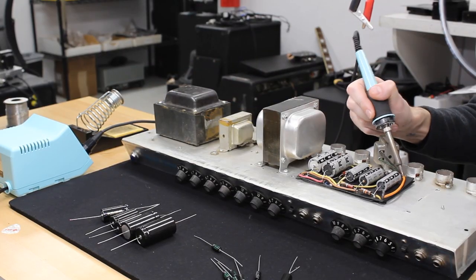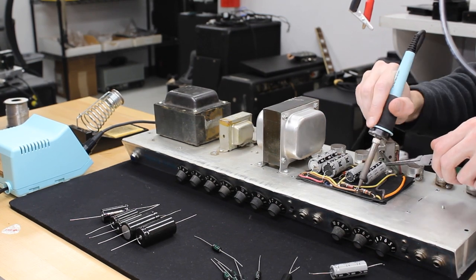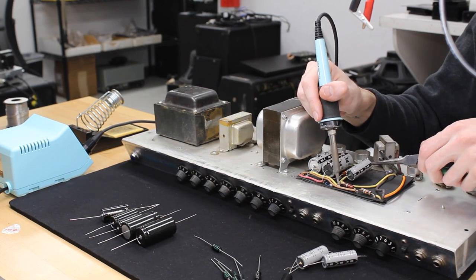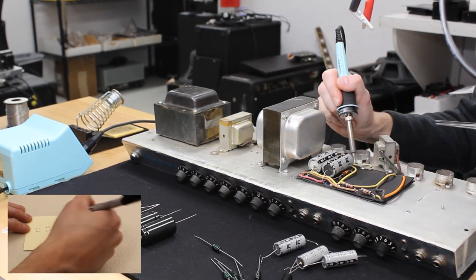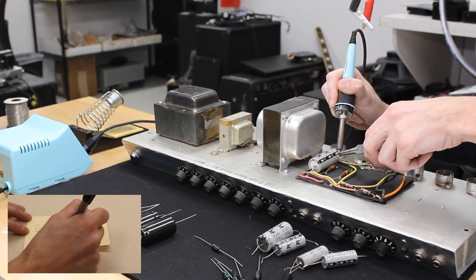Now we can begin removing the capacitors by heating one connection at a time and lifting the lead from the eyelet using our pliers. Solder removers such as a braid or a sucker can also be helpful. We'll note the orientation of each capacitor before removing it. A drawing or a picture can be extremely helpful.